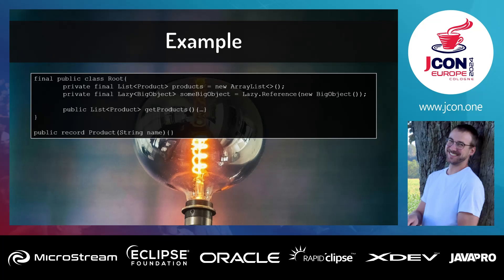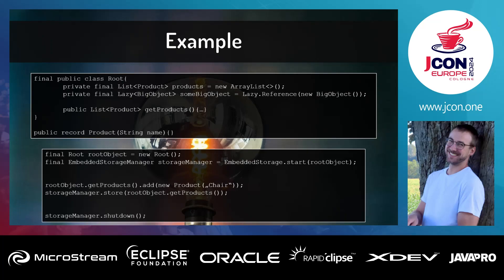As you can see, there are no annotations or IDs necessary. To start the storage, we create a new instance of the root and start the embedded storage by giving it the root object. It checks the storage — if there's already a root in your files it fills the object with existing data; if not, it stores the new root object. In this example, we get the products, add a new product called 'chair', store it, and shut down.